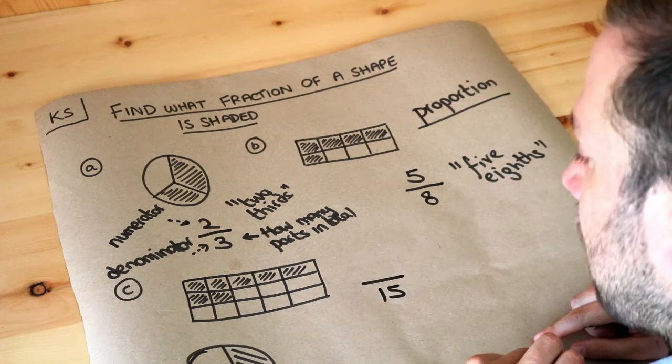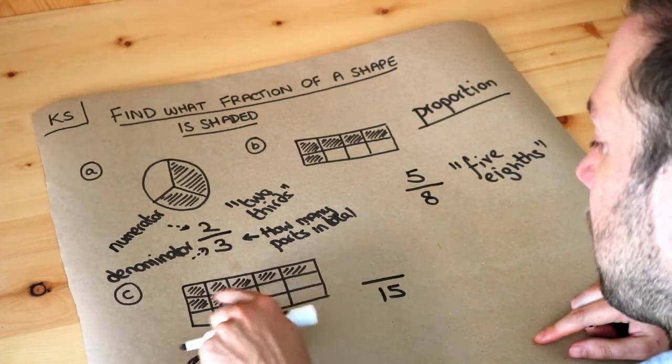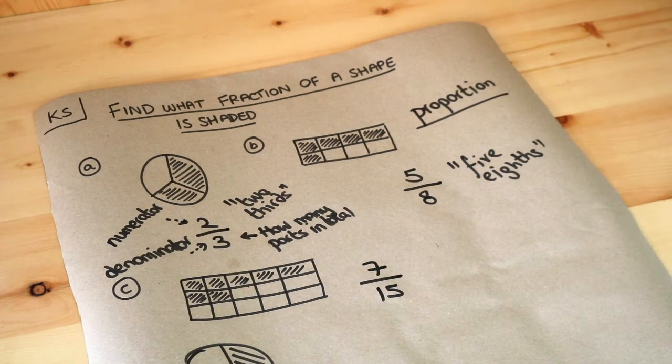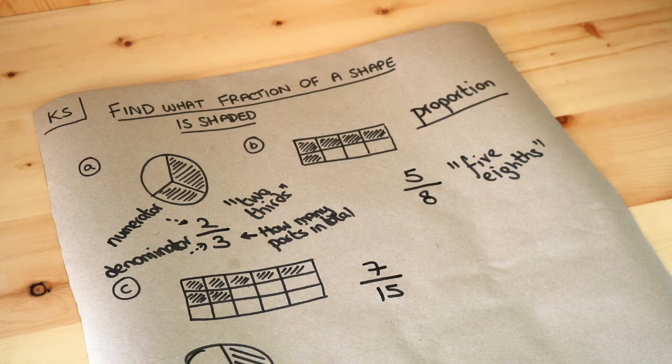And how many of those parts do we have shaded? One, two, three, four, five, six, seven. So seven-fifteenths of that diagram is shaded. One, two, three, four, five, six, seven.